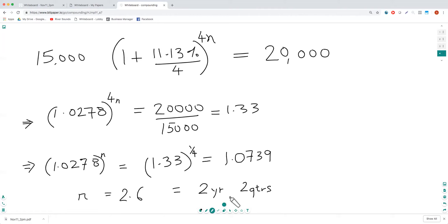You get n is equal to 2.6. Let's plug this formula back in and see if it actually does satisfy this equation. So we've got 1 plus 0.0278, which is this percent divided by 4, power 4 times our number of years, because that's the formula.